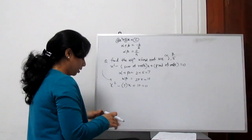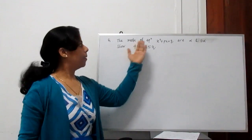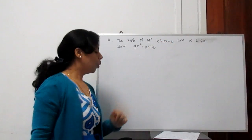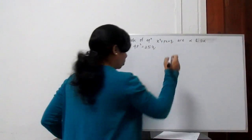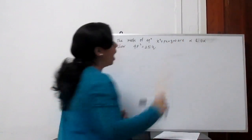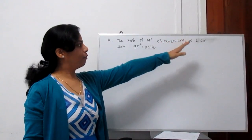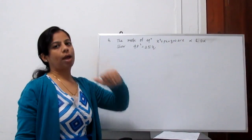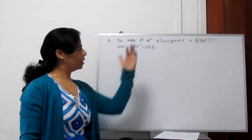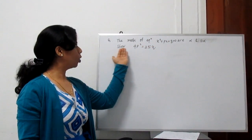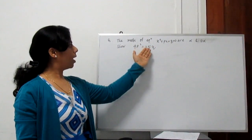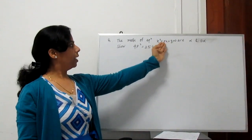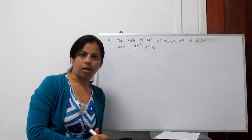The next example: the roots of the equation x² + px + q = 0 are alpha and 4 alpha, so the second root is 4 times the first root. We need to show that 4p² equals 25q, where p and q are given in the equation.